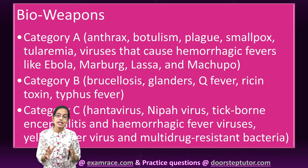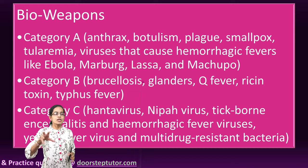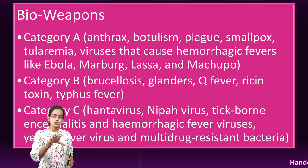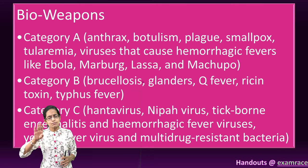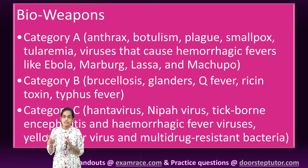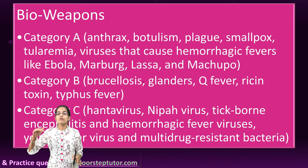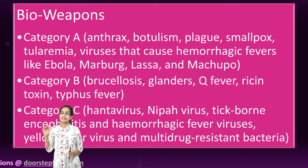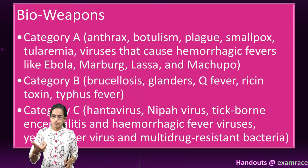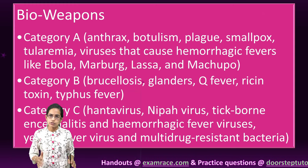Category A is the highest priority category. These are disease agents that are highly detrimental to national security, can be immediately transmitted from one person to another, have a very high rate of mortality, and can lead to social disruption. Common examples of bio-weapons in Category A are anthrax, plague, smallpox, Ebola, Lassa, and other hemorrhagic fevers.